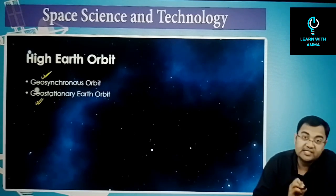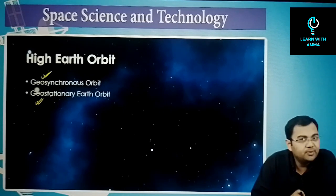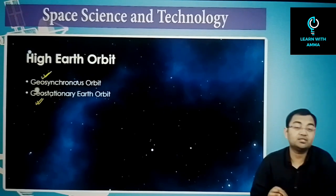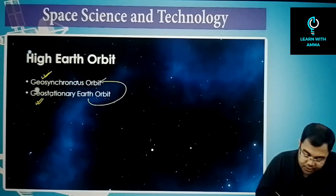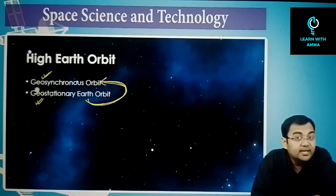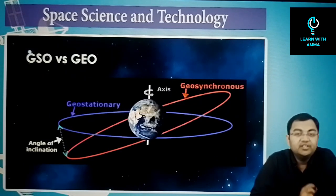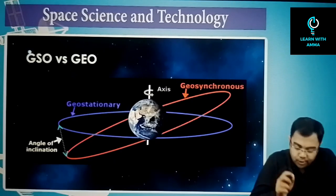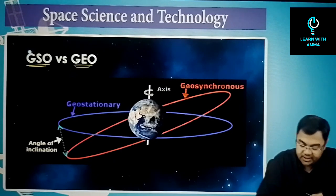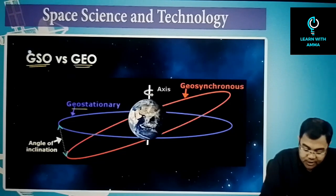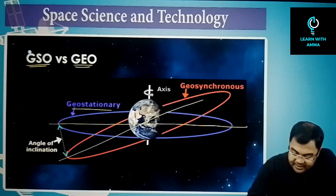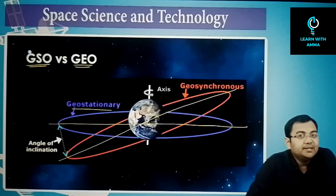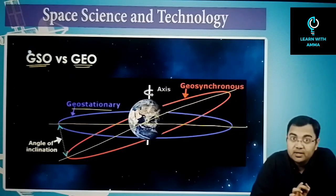There is a difference between geosynchronous and geostationary orbits — just as geostationary orbit is a special case of geosynchronous orbit, similar to how sun-synchronous was a special case of polar orbit. In the diagram, the geostationary orbit is in the equatorial plane, while the geosynchronous orbit is slightly inclined.